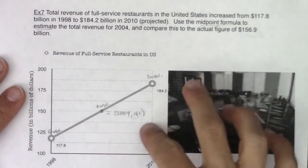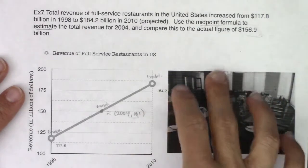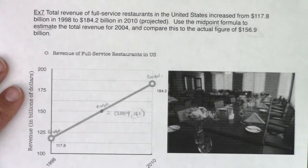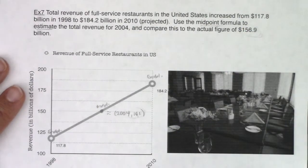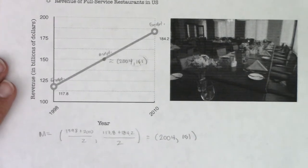We underestimated by about 6 million, to be exact 5.9 million. So this was an underestimate. We thought in 2004 the restaurant business was only going to clock in at 151 billion, and it exceeded our estimate. Let me move this back up, and let's practice writing this in a sentence.